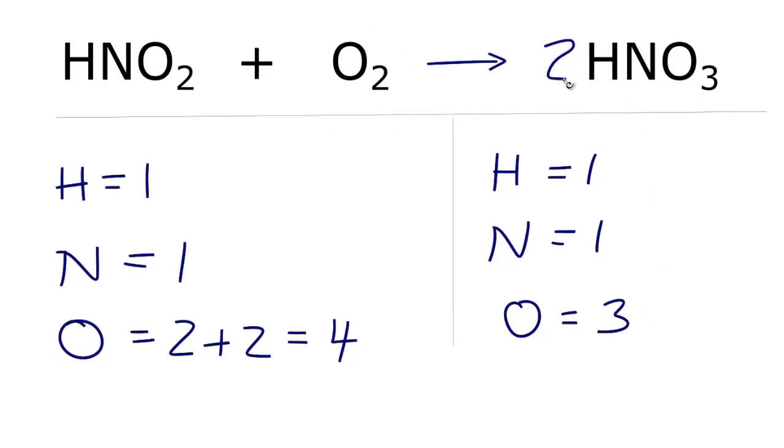So to get this to an even number, I'm going to put a coefficient of two in front of the HNO3 and three times two. That gives me six. So now I have six oxygens here and four here. It's a little bit better.